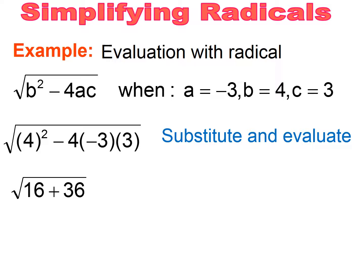Now I'm going to do the addition under the radical and get 52. 16 plus 36 is 52, and everything is still under the radical. Now that I have it down to one number, I can simplify the radical. When you simplify the radical, you want to break it into the perfect square factor — the highest perfect square factor — and your leftover.